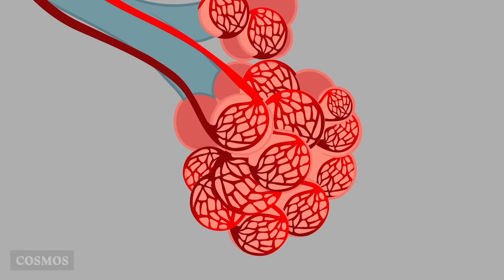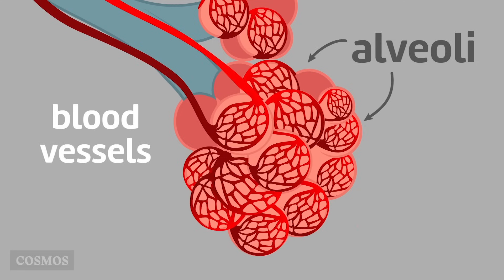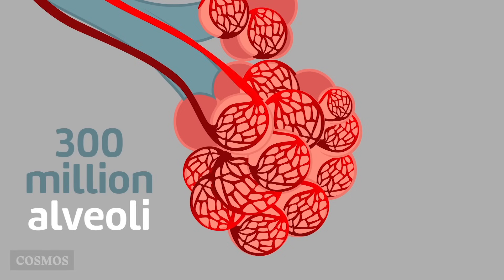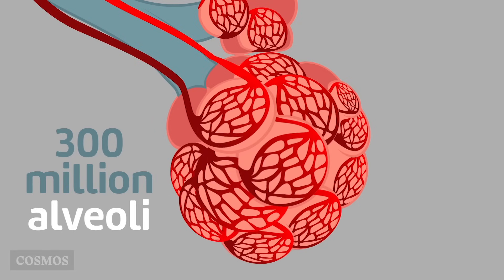The exchange of gases between the blood and the air occurs in the alveoli, microscopic air sacs in the lungs that are surrounded by tiny blood vessels. When we inhale, all 300 million alveoli expand and fill with air.